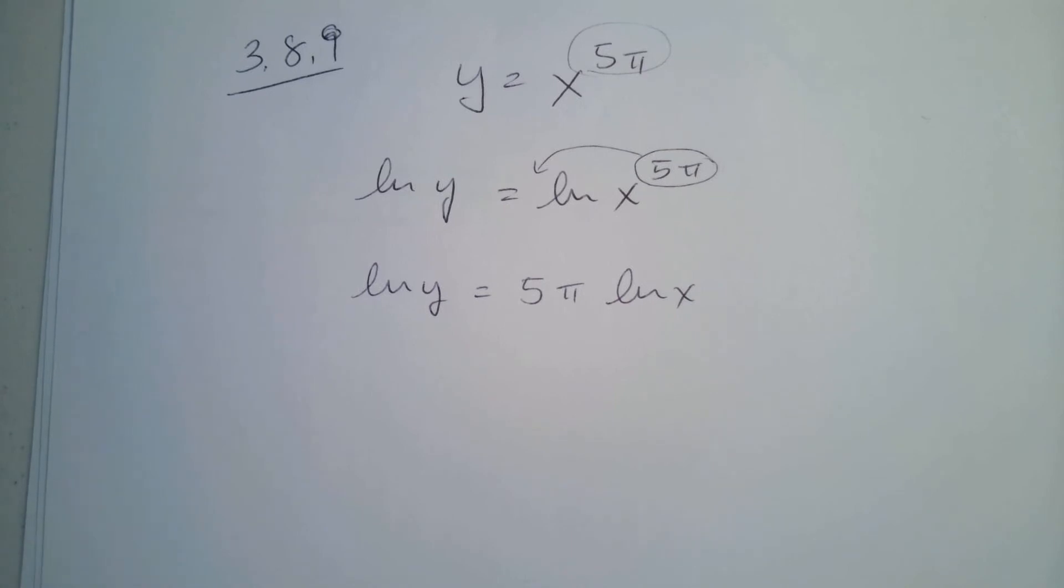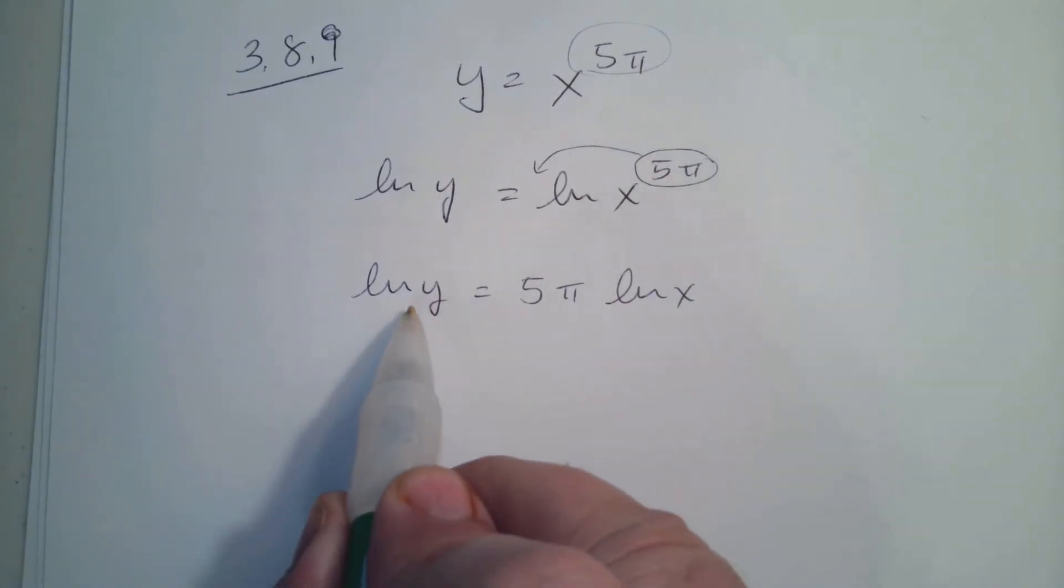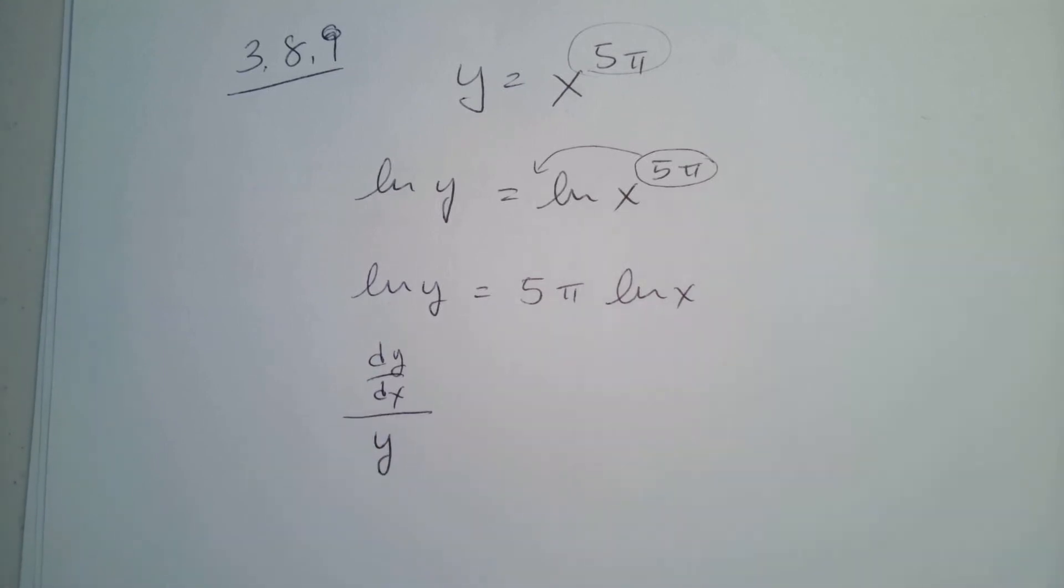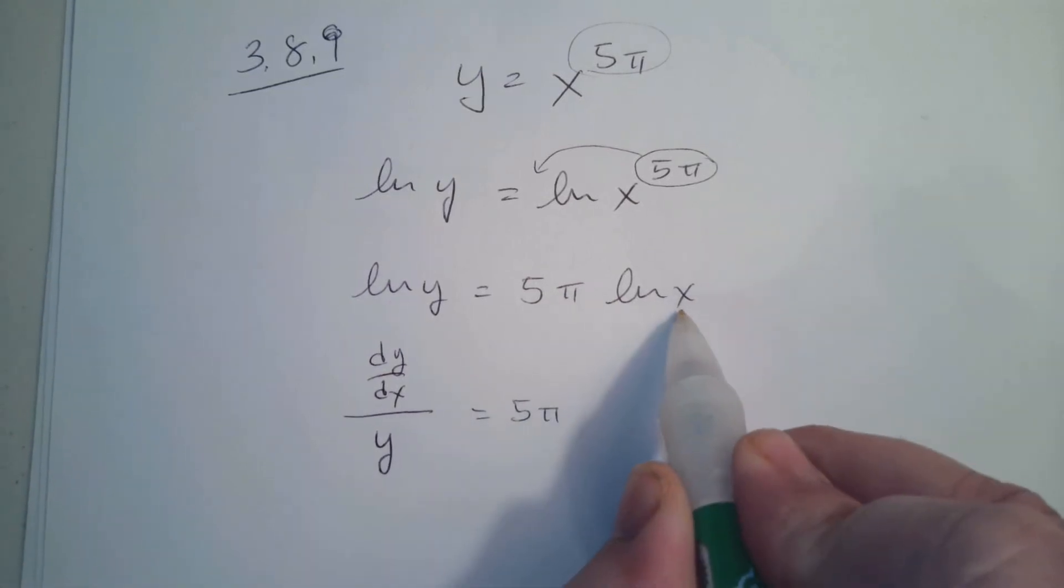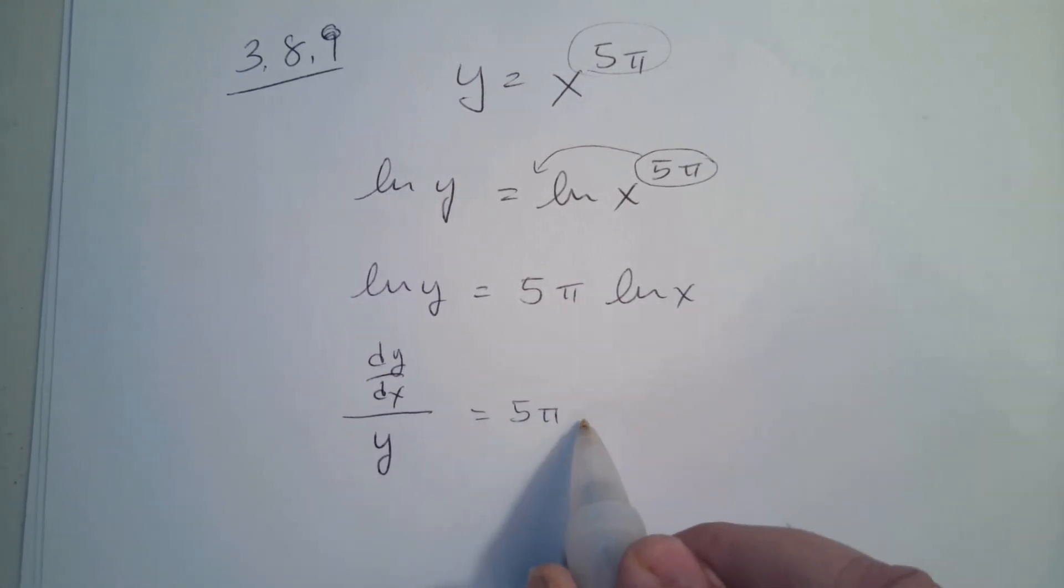Alright, now we take the derivative of both sides. The derivative of ln y is dy/dx over y. The derivative of ln x is 1 over x.